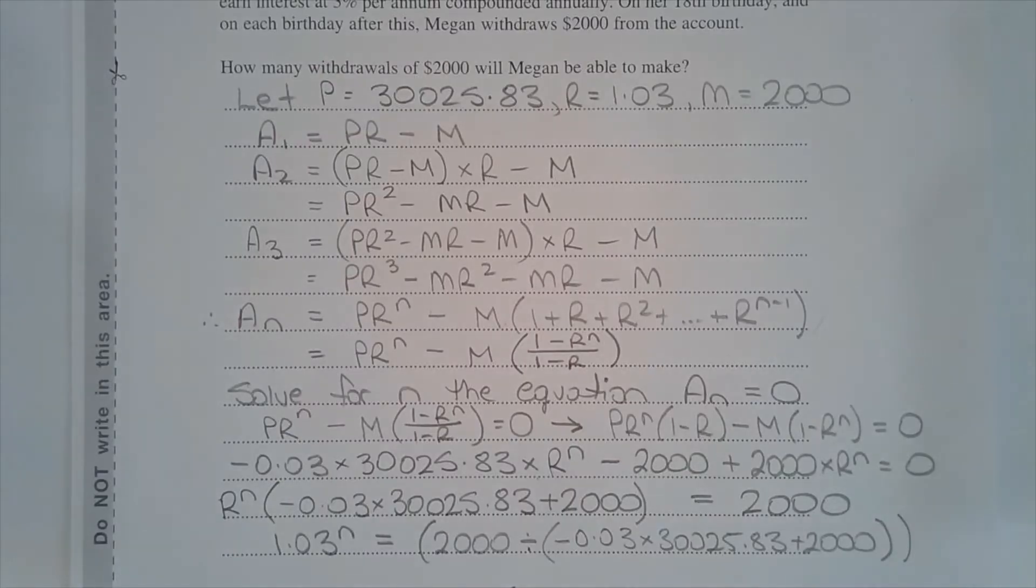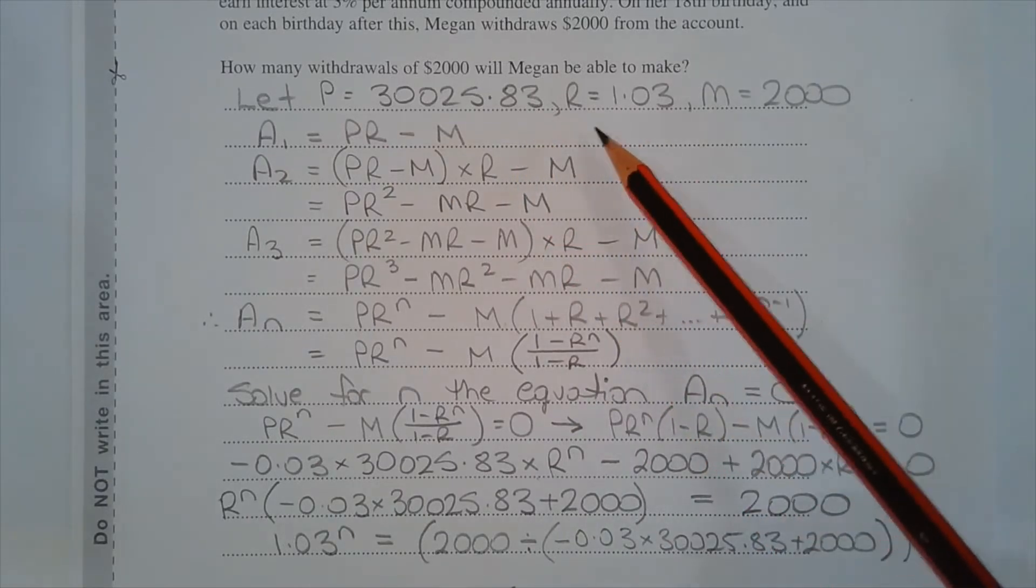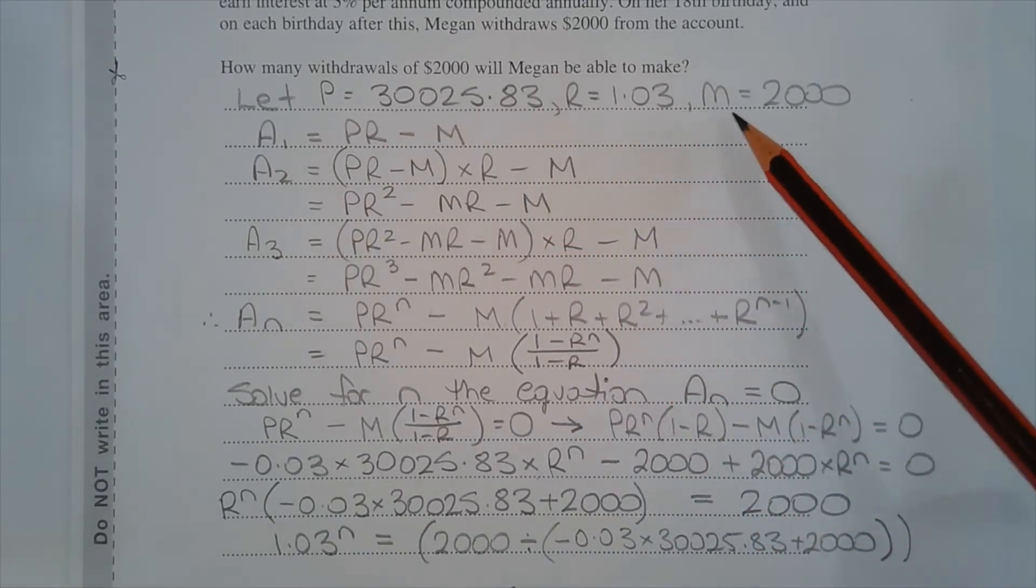The first step is to find a non-recursive formula that represents the amount of money in Megan's account after n withdrawals of $2,000. Let P equal $30,025.83, R equals 1.03, and M equals $2,000.